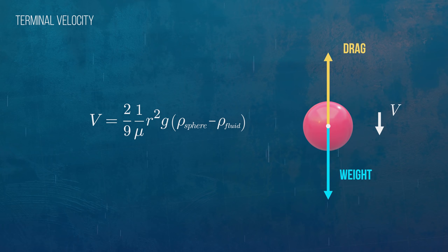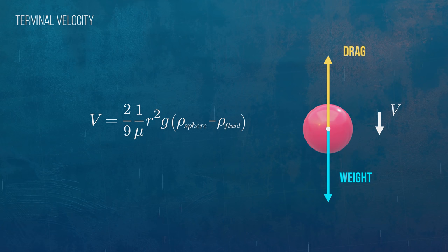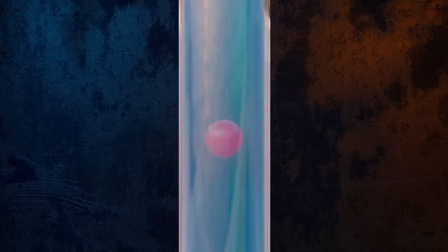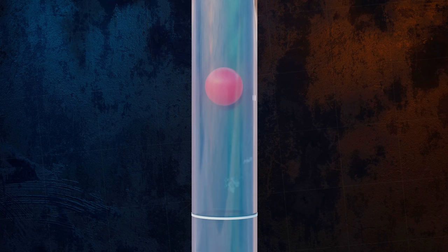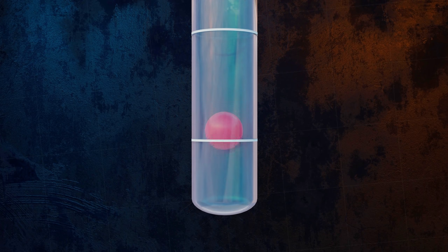We can apply this equation to create a viscometer, which is used to measure the viscosity of a fluid. To do this, a sphere is dropped into a tube of liquid, which is long enough that the sphere will reach terminal velocity. The terminal velocity can be measured by timing how long it takes the sphere to pass between two points marked on the tube. And so, the viscosity of the fluid can be calculated using the equation we just derived.